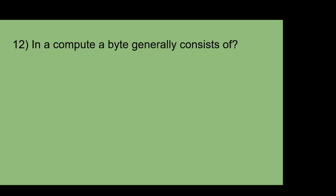In a computer, a byte generally consists of: 2 bits, 4 bits, 8 bits, or 16 bits. A bit is a short form of binary digit. 4 bits is called a nibble and 8 bits is called a byte. So the answer is 8 bits.